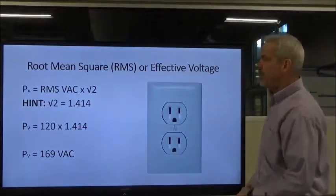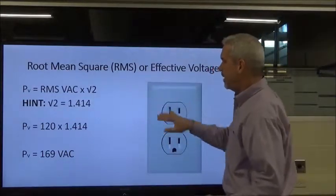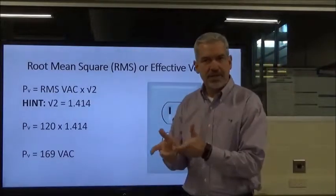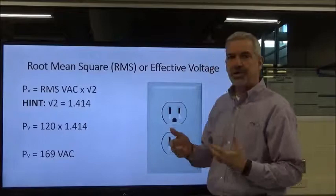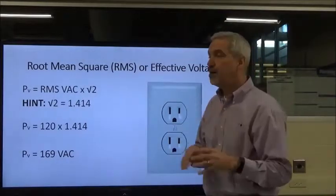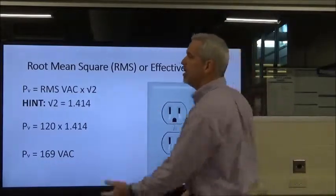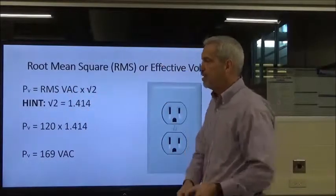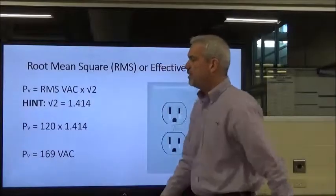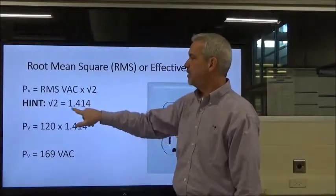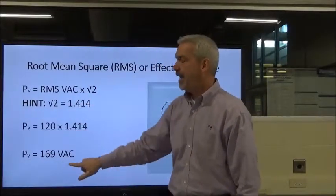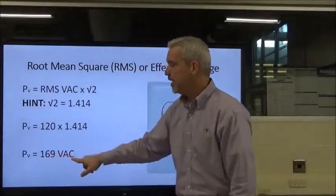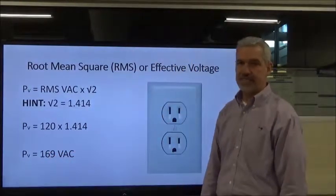Same thing with our outlet. We take one leg of that 240 and bring it to one of our outlets. When we stick our voltmeter into the outlet, we should measure 120 volts root mean square. But what's our peak voltage? We do the formula again: take the RMS value from our meter — 120 volts — and multiply by the square root of two, 1.414. Our peak voltage coming out of our outlet is actually 169 volts AC.